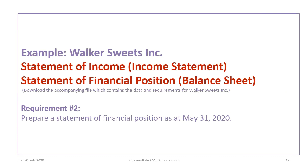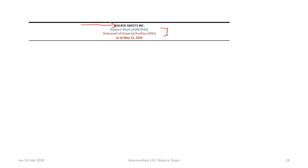Now that we have completed requirement 1, we will proceed with requirement 2: to prepare a statement of financial position as at May 31st, 2020. We begin with the name of the company, Walker Suites Inc. Depending on whether we follow ASPE or IFRS, that determines the correct terminology. We can use the term balance sheet — acceptable under both ASPE and IFRS — or, under IFRS, we may use statement of financial position.